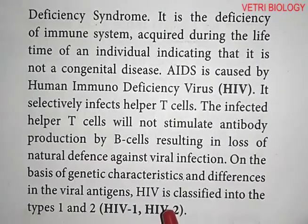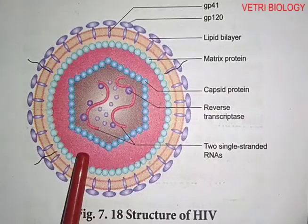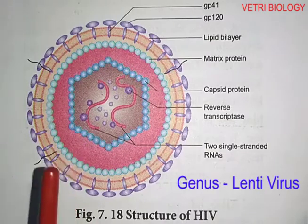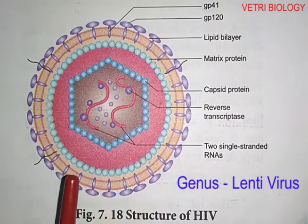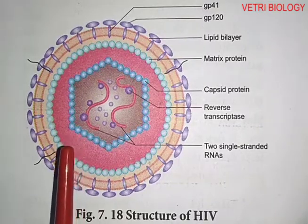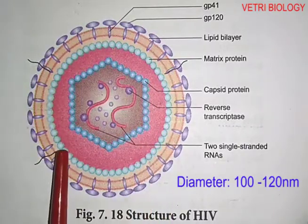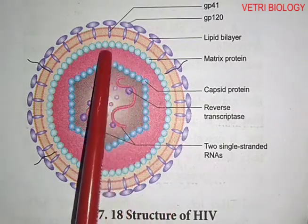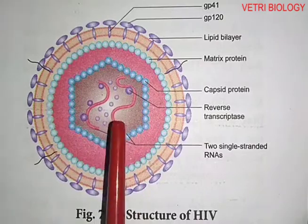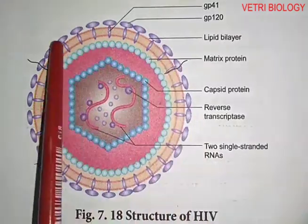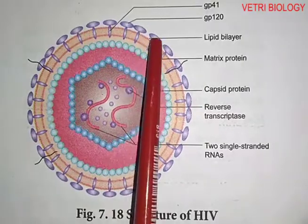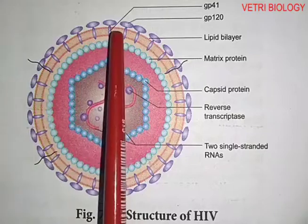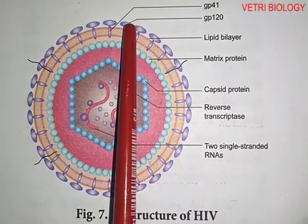Let us know the structure of HIV — Human Immunodeficiency Virus. It belongs to the genus Lentivirus. HIV can be observed under the electron microscope. It is a spherical virus with a diameter of 100 to 120 nanometers. It has a dense core surrounded by a lipoprotein envelope. This envelope has glycoprotein spikes made up of two types of proteins: glycoprotein 41 and glycoprotein 120.